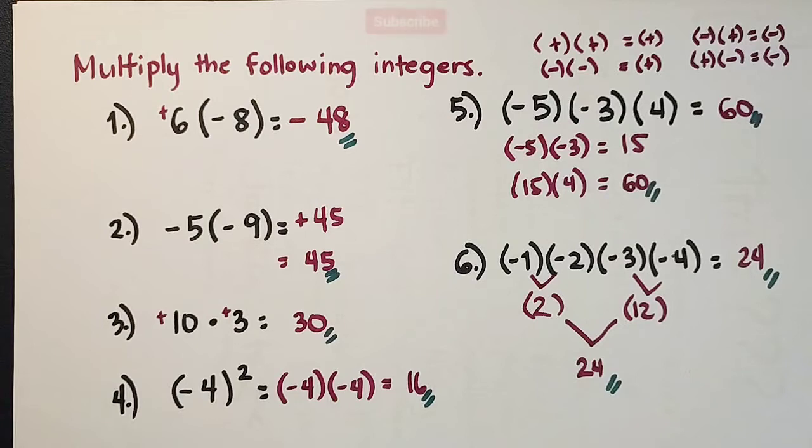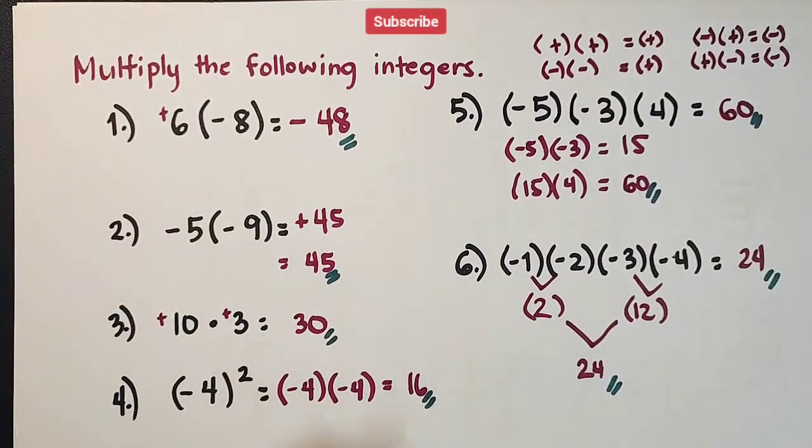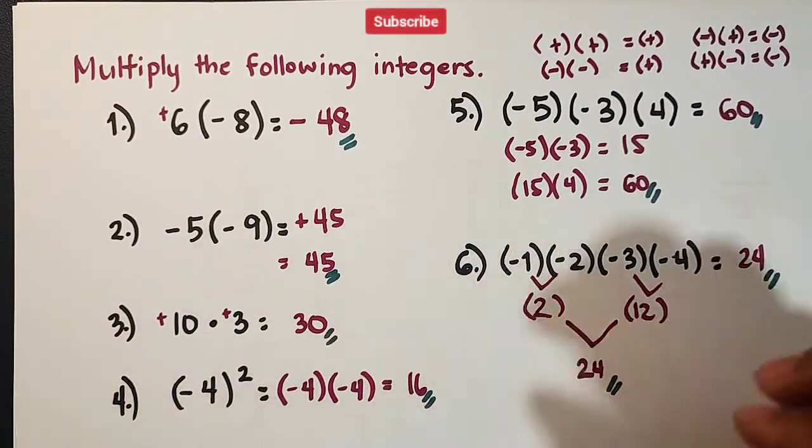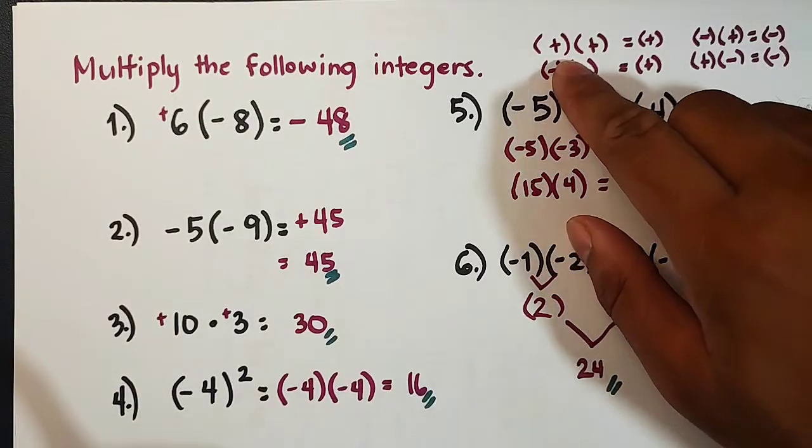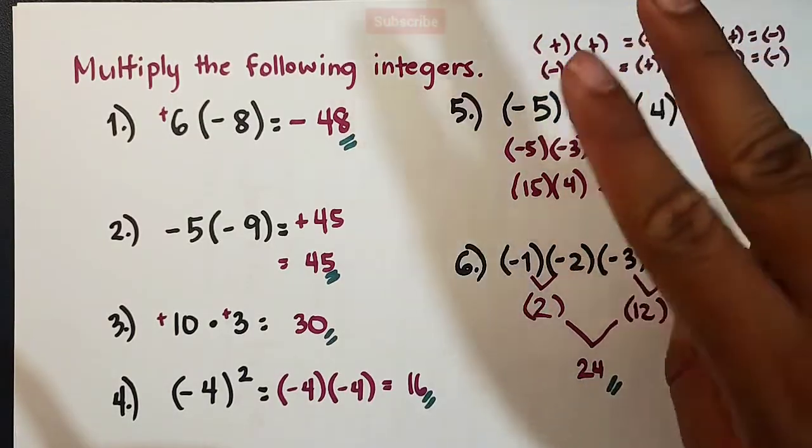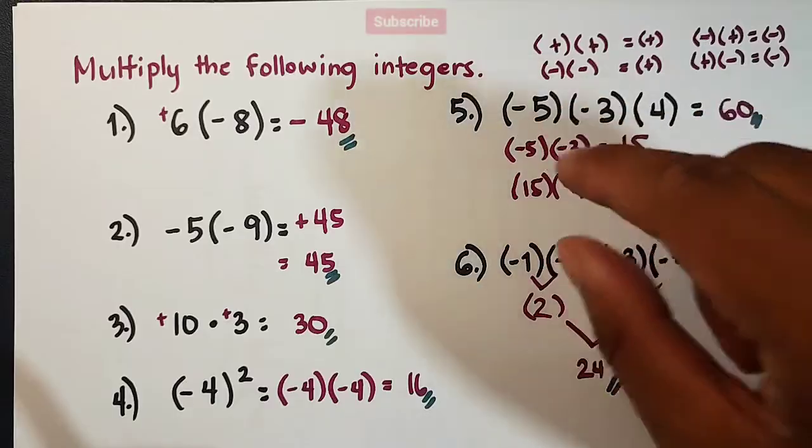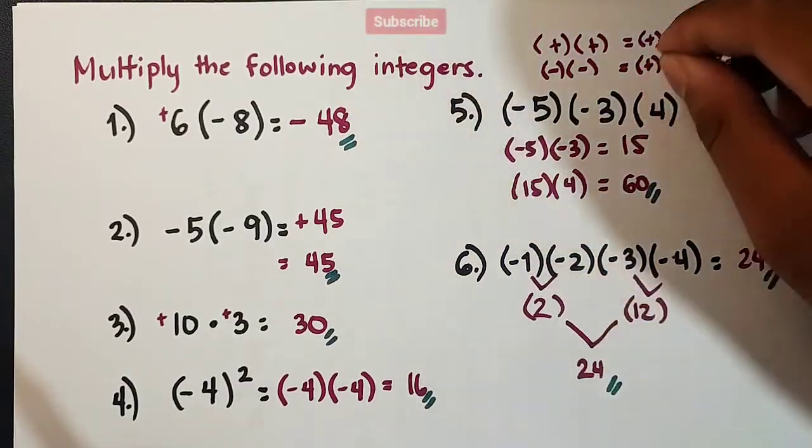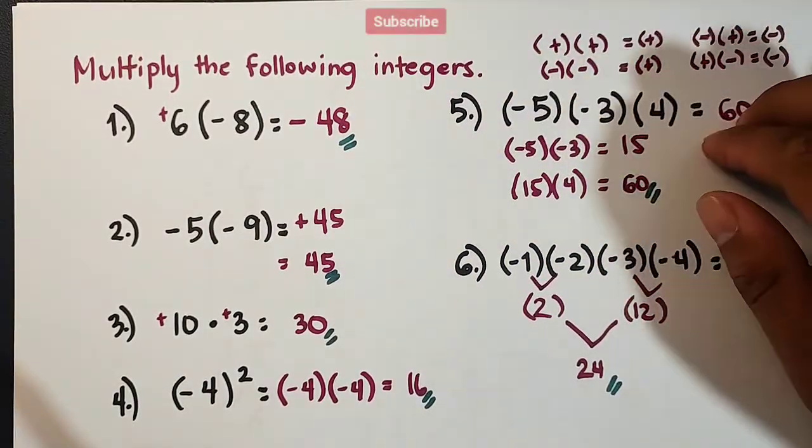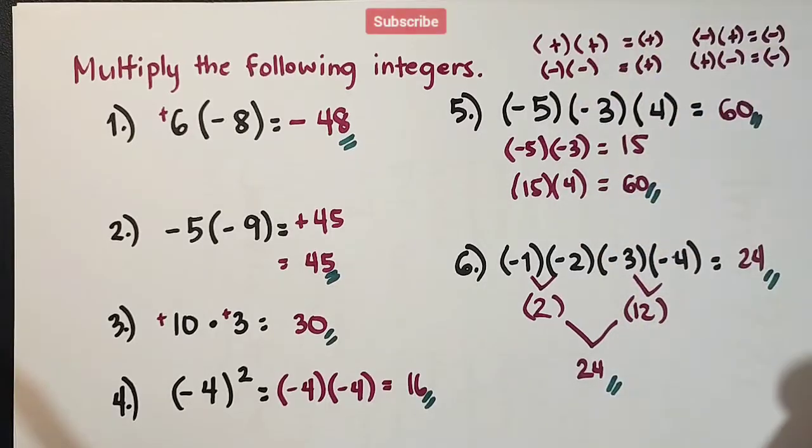So, I hope you learned from this video on how to multiply integers. Remember, the rule. Same signs, two integers with same signs, negative negative, positive positive, positive answer. Different signs, negative answer.